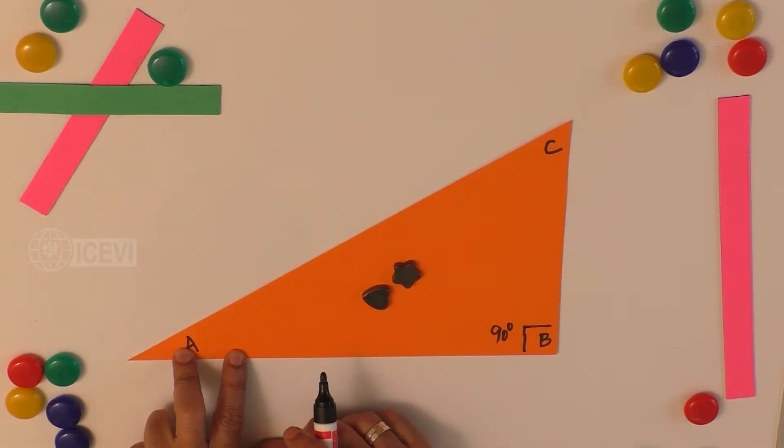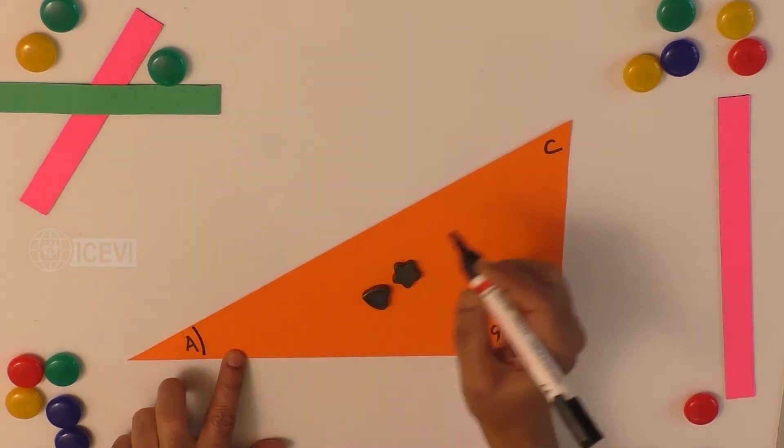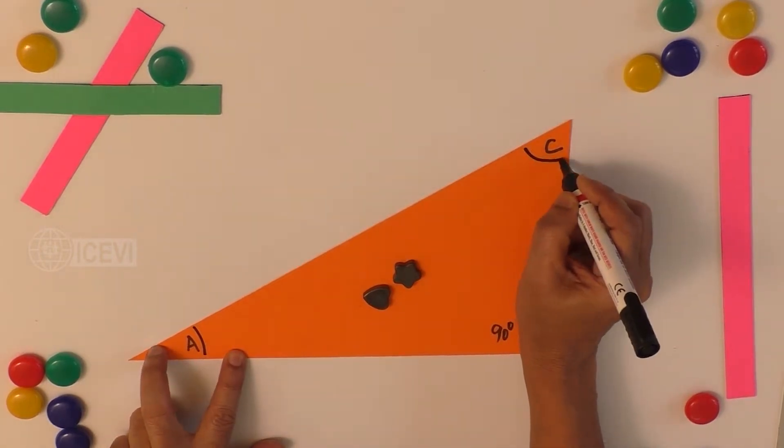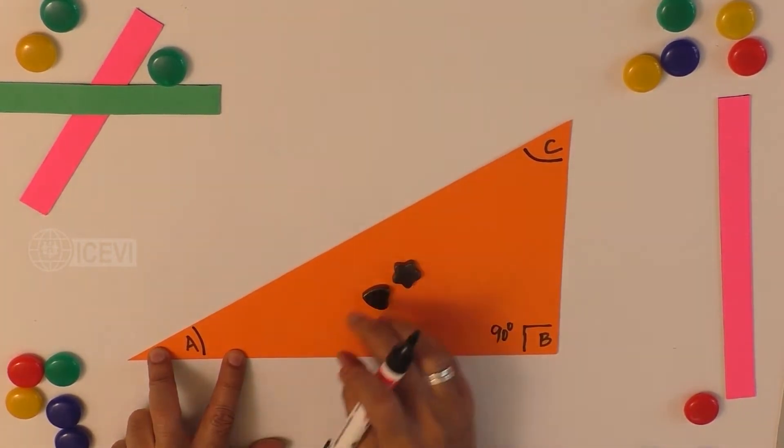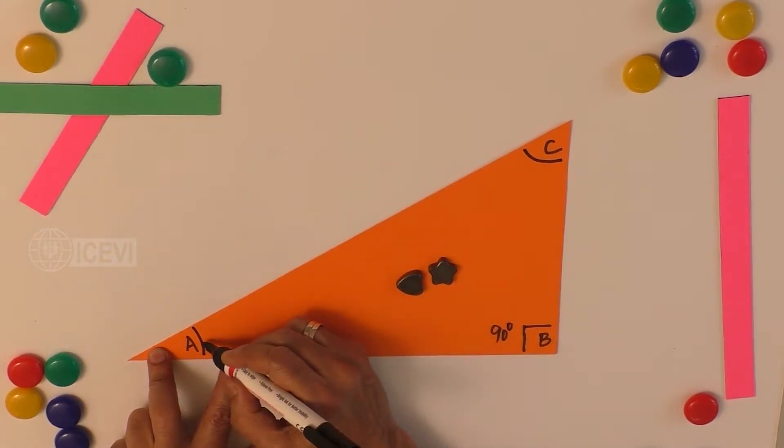angle A and angle C put together will be 90 degrees. So that means A is less than 90 degrees, C is less than 90 degrees.